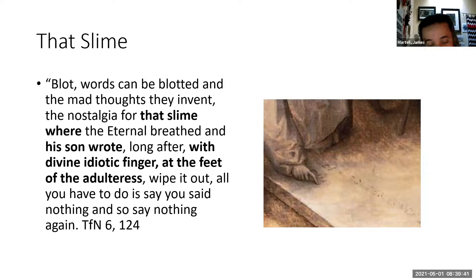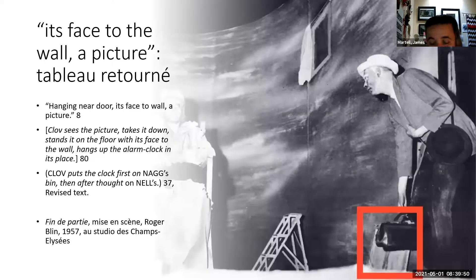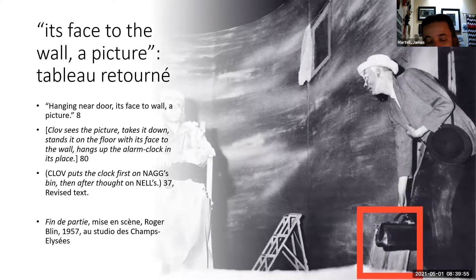Our next surface is a disappearing one. You might read it in the text, but chances are you won't see it on the stage when you go to see the play. It appears, without really appearing, in the stage directions of Endgame, thusly: quote, 'hanging near the door, its face to wall, a picture,' end of quote. And later, when Klopp is trying to find where to set up the alarm clock that would let him know if he left or died, the original text says that this picture is replaced by the alarm clock and put on the floor with its face against the wall.